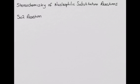If we start with a chiral reactant, the SN2 reaction will produce a chiral product. Let's look at an example.